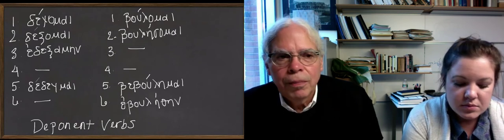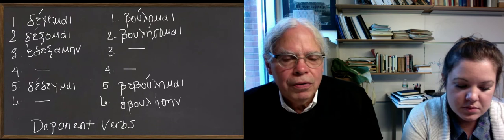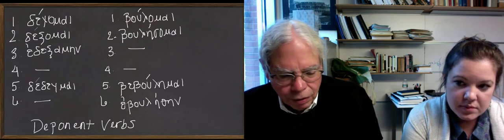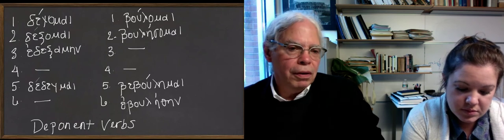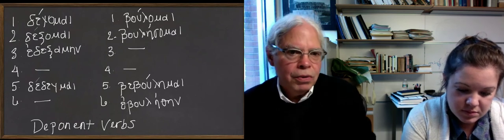So what we're talking about, therefore, is middle-only verbs. And there are—the book divides them into two types.